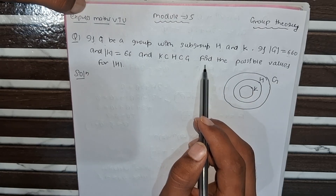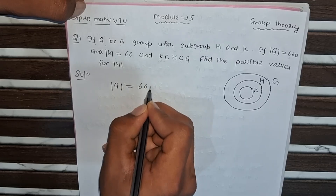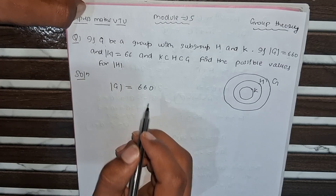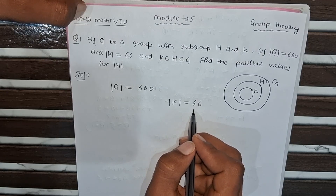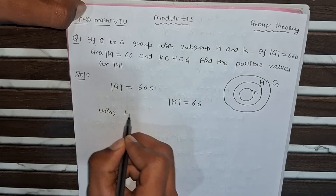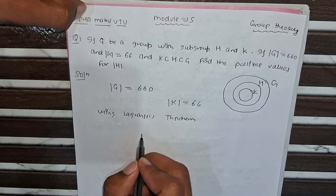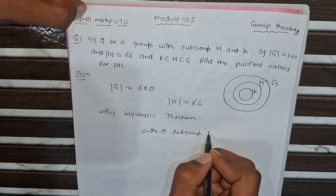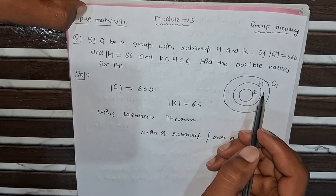We have to find the possible values of the order of H. What is given: order of G equals 660, which represents how many elements are in group G. Order of K equals 66, representing how many elements are in subgroup K. Using Lagrange's theorem, which states that the order of a subgroup divides the order of the group.